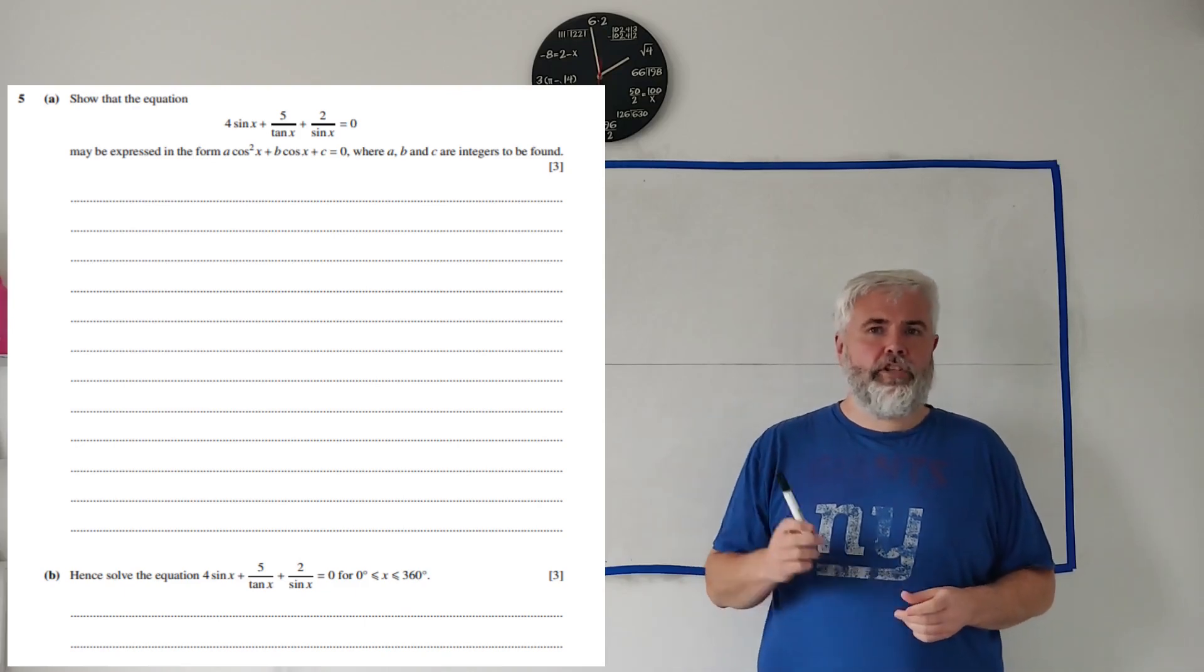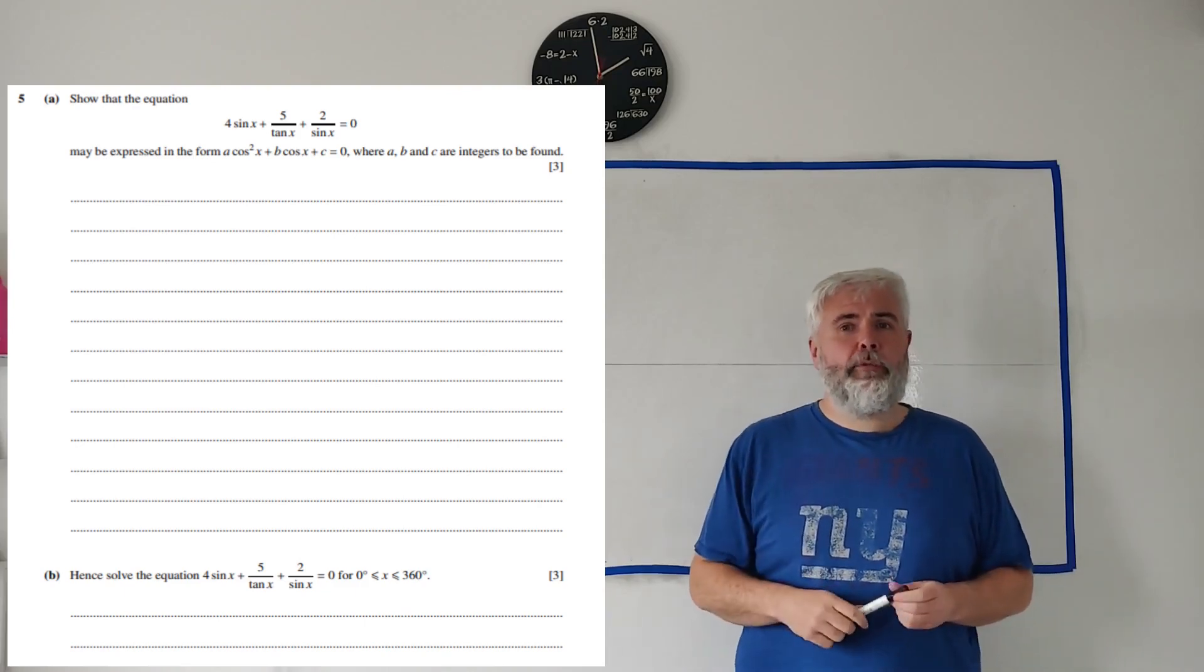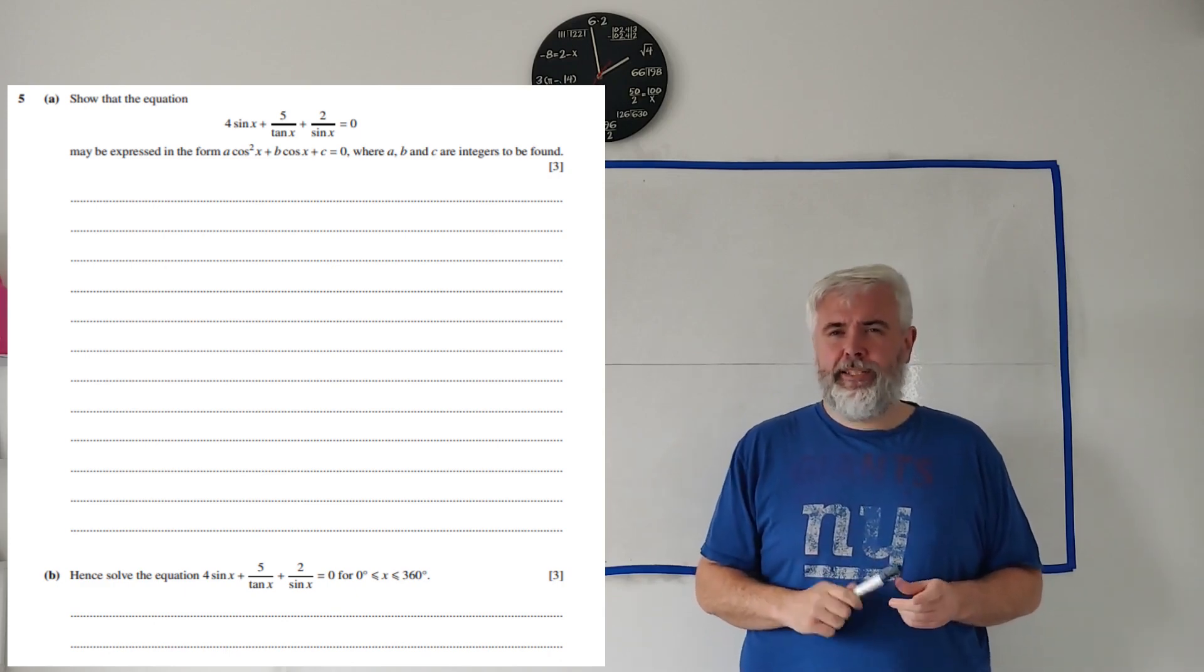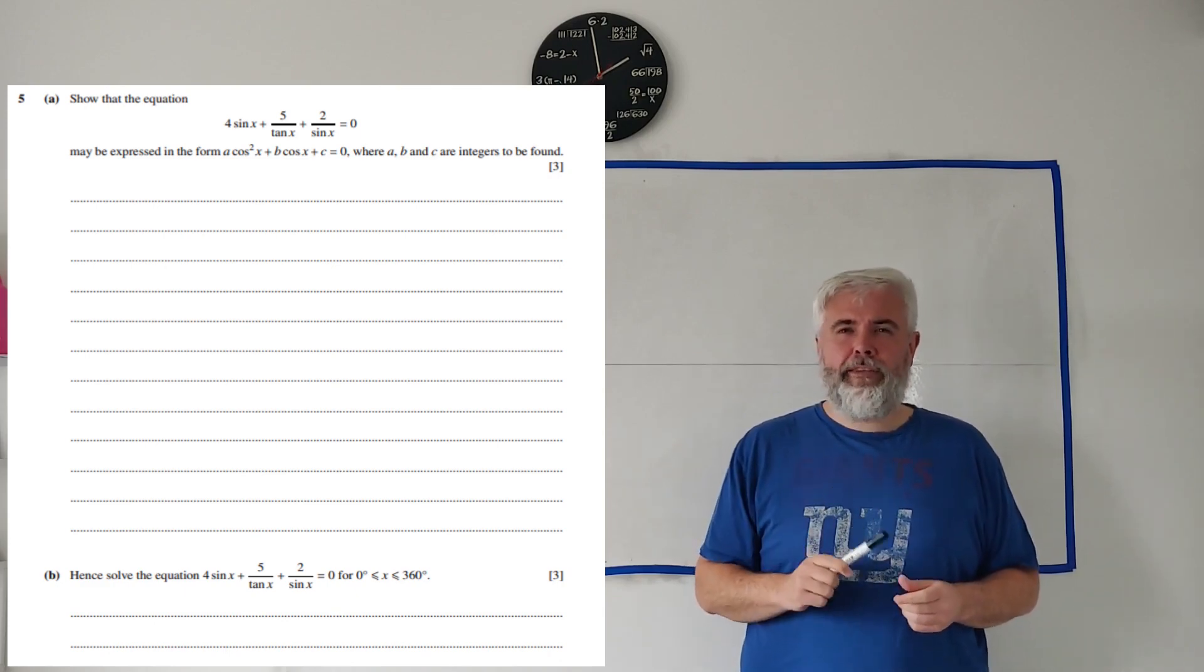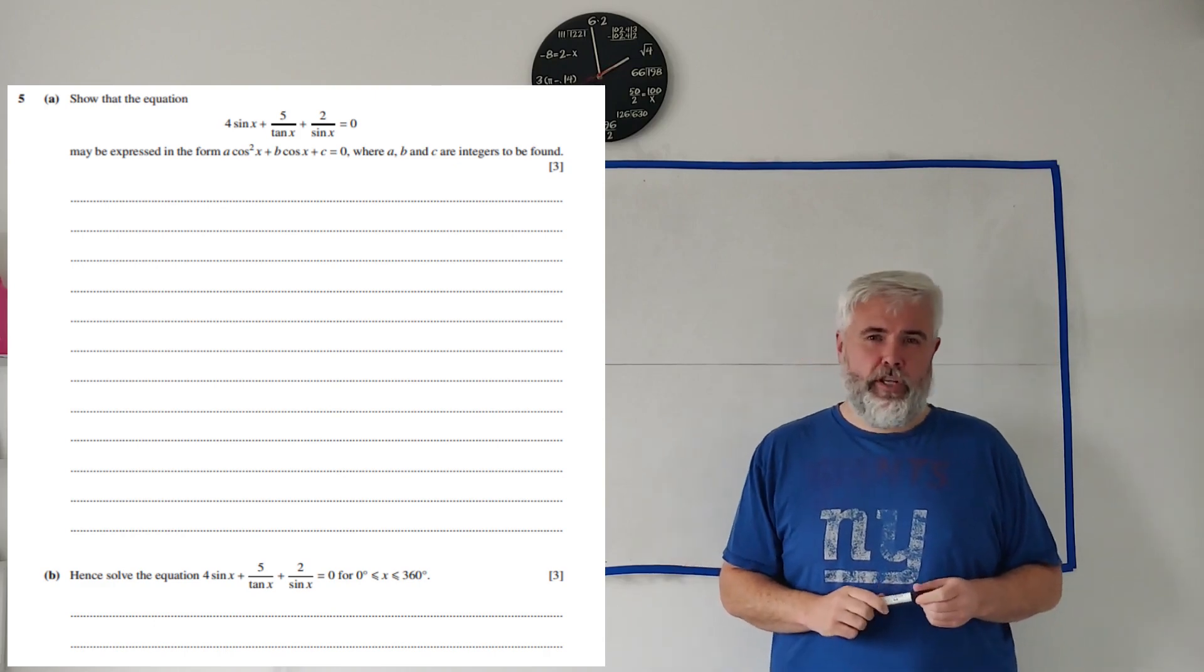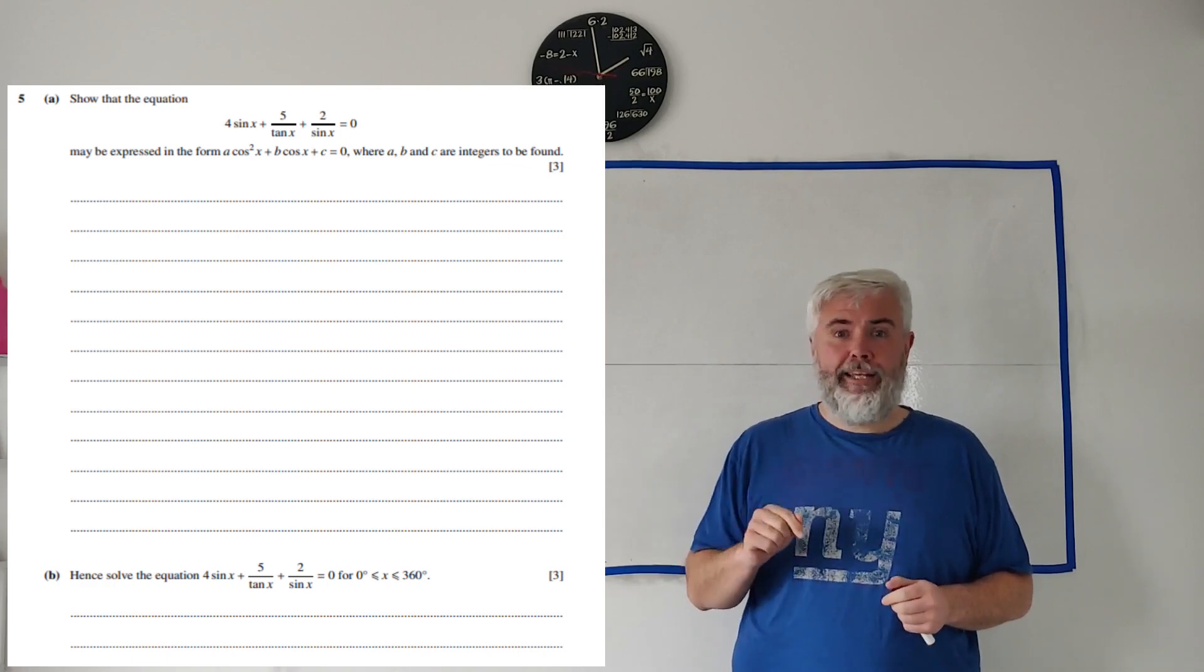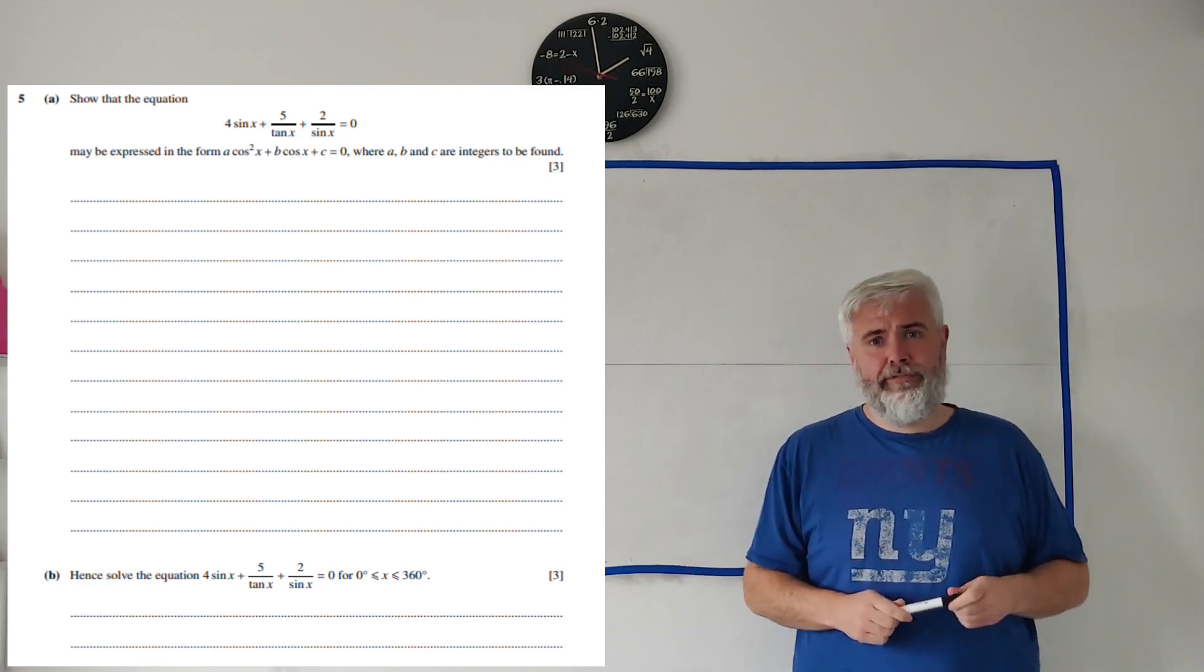In this video I'll be working through the question you can see on the screen from the Cambridge A Level Maths Paper 1. Specifically it's Paper 1-1 from the Winter Exams in 2023. If you're looking for a different question from this paper there should be a link to a playlist with all the questions below this video.